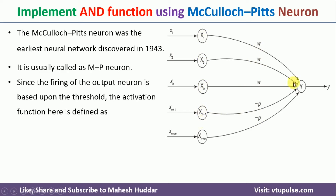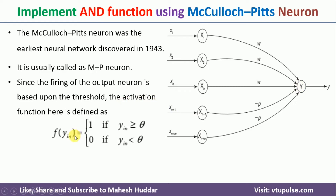Since the firing of the output neuron depends on the threshold value, the activation function is defined as: f(yin) = 1 if yin is greater than or equal to theta, where theta is the threshold value. So for a given threshold, if yin is greater than or equal to that threshold, the neuron will fire; otherwise, it will not fire.